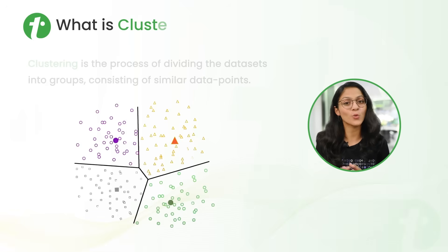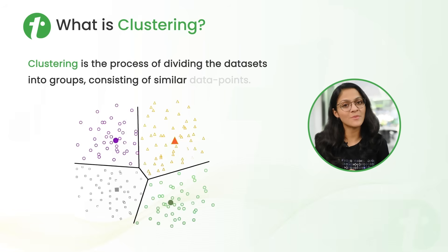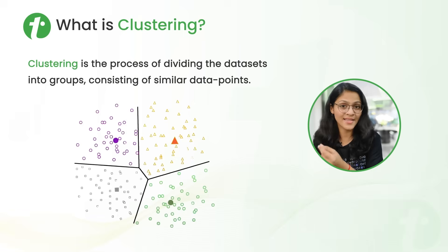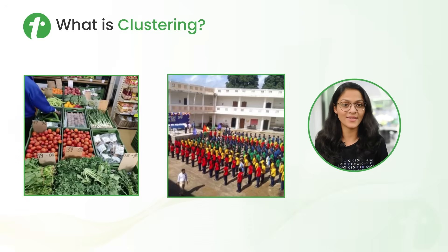Let's first discuss what is clustering. Clustering is the process of dividing a dataset into groups consisting of similar data points. That means we cluster the dataset such that two data points that are similar will lie in the same group, and two data points that are dissimilar will lie in separate groups. We can observe clustering in our day-to-day life as well.